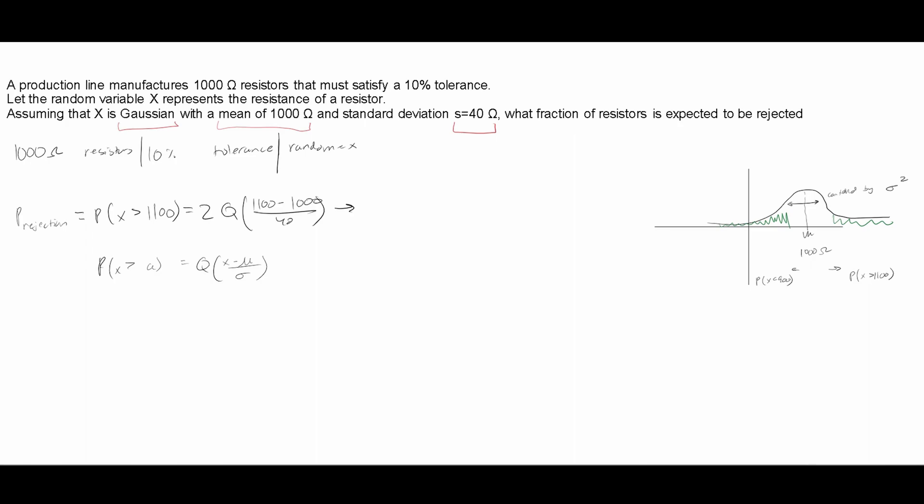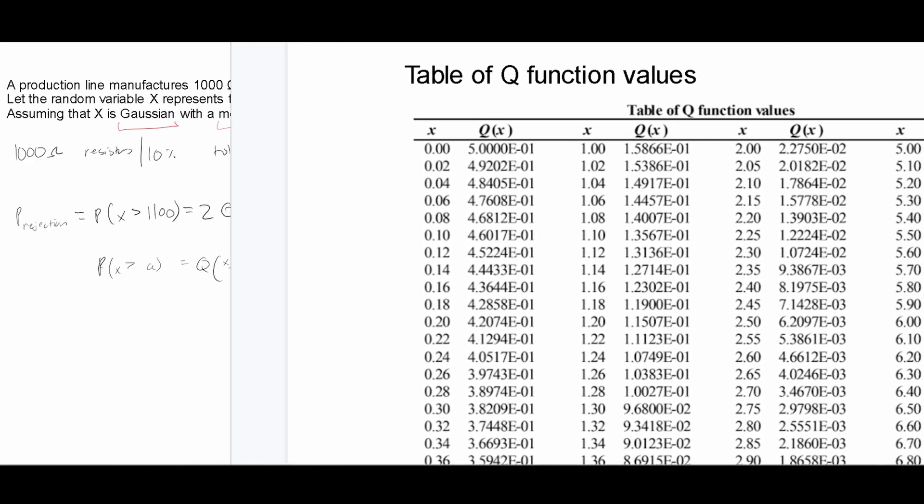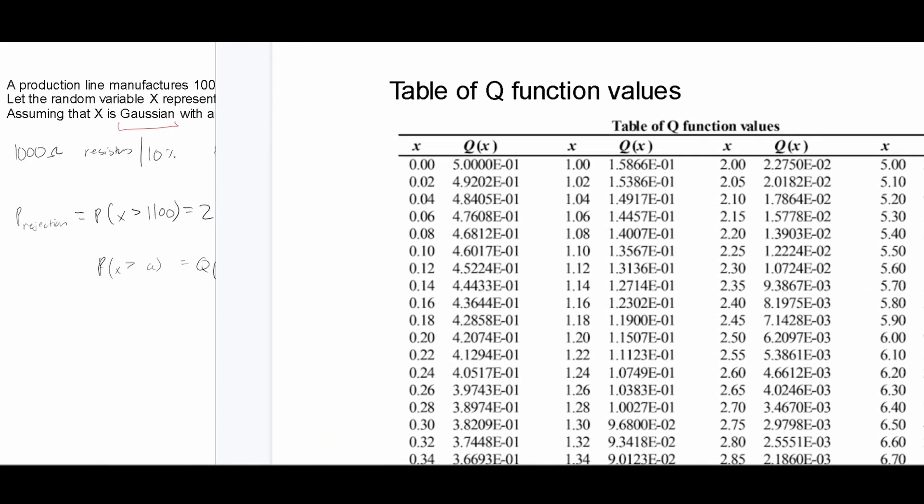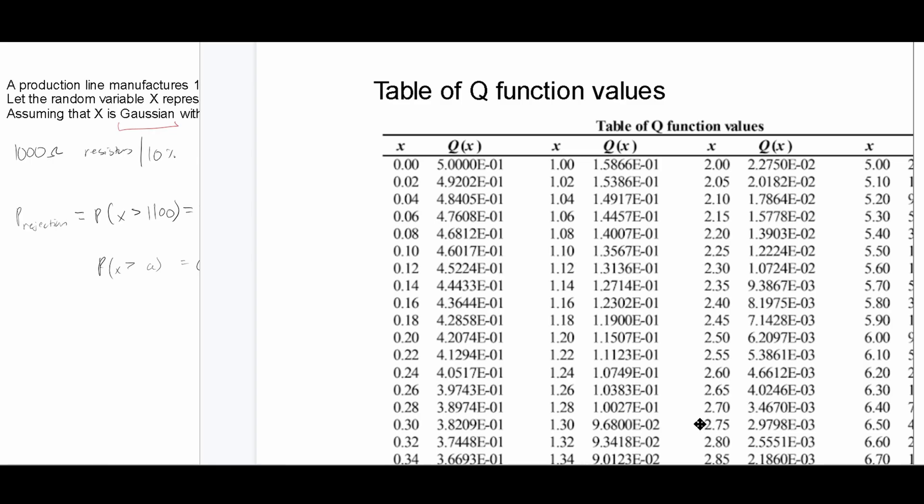So once we plug all this in, we're going to get approximately 2 times Q of 2.5. And if we look at the notes that are in the description below the like button, we are going to have this table of Q functions. We're looking for 2.5. So we want to find X of 2.5. That's going to be this one right here.